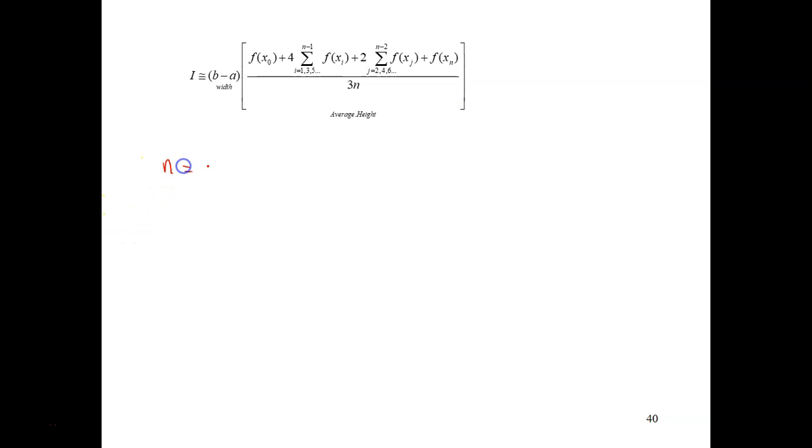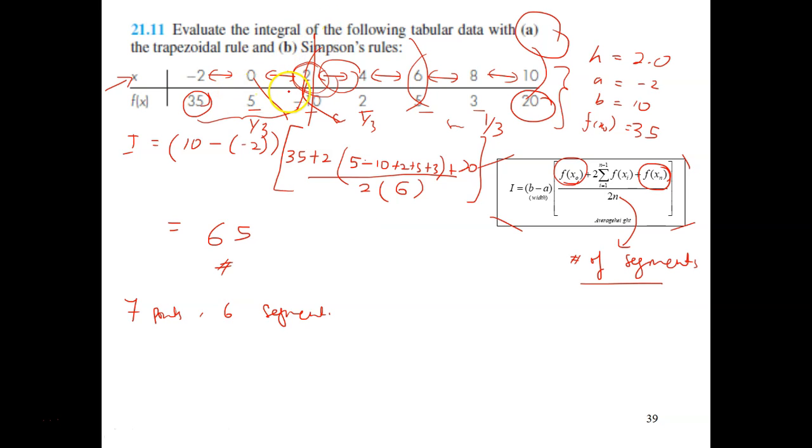So here, n is six. And just plug in the integral. So b minus a is 10 minus negative two, is the same as before. And then in the bracket, fx0 is 35. So if you look at here, the first point is this. This is the first point, second point, third point, fourth point, fifth point. So what is the odd points here? Odd points is this. One, three, one, two, three, four, five.